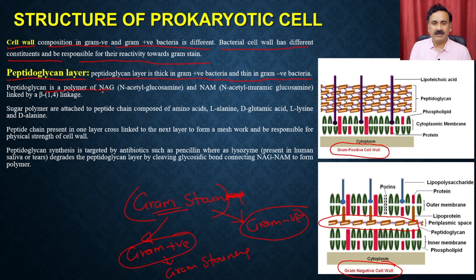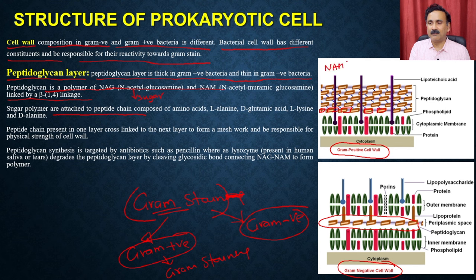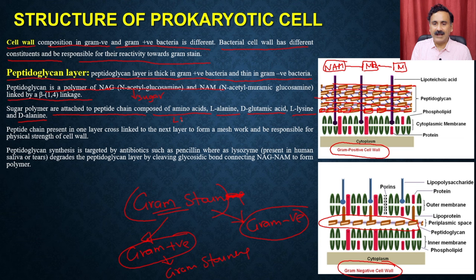The outermost layer is a peptidoglycan layer. This peptidoglycan layer is very thick in gram-positive bacteria — multiple layers are present — whereas it is very thin in gram-negative bacteria, and because of this there is a differential response towards gram staining. Peptidoglycan is a polymer of NAG (N-acetylglucosamine) and NAM (N-acetylmuramic acid). These sugar molecules are connected to each other by a beta-1,4 linkage, with alternating NAM and NAG blocks. The sugar polymer layers are attached by peptide chains composed of L-alanine, D-glutamic acid, L-lysine, and D-alanine — a combination of L and D amino acids.